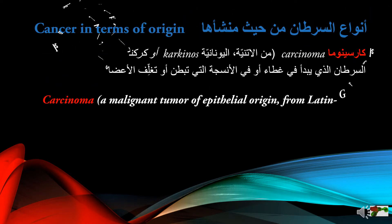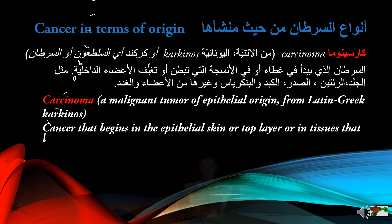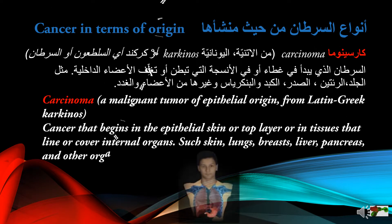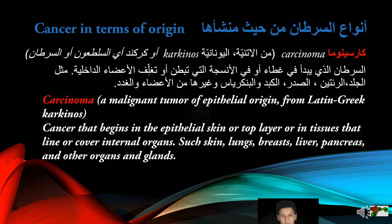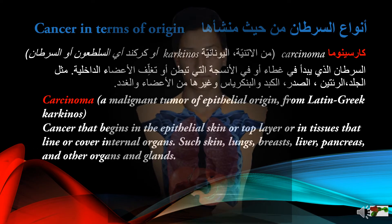Carcinoma is a malignant tumor of epithelial origin, from the Latin-Greek word 'karkinos.' It is cancer that begins in the epithelial skin or top layer, or in tissues that line or cover internal organs, such as skin, lungs, breasts, liver, pancreas, and other organs and glands.